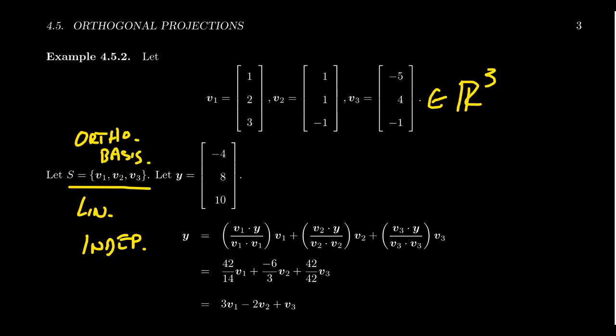So, why is that important? Well, let's consider the vector Y right here. Negative 4, 8, and 10. Well, since this is a vector in R3, and since our basis, the set S, is a basis for R3, we know that Y can be spanned by the vectors in S.